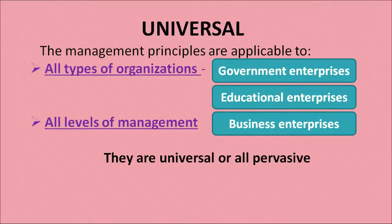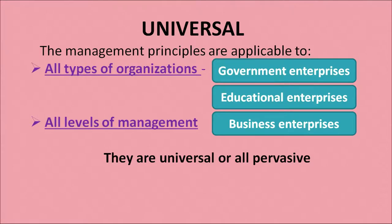The first characteristic is that management principles are universal. That means they are applicable to all types of organization — whether a business organization or a non-business organization like educational and non-governmental organizations — and they are equally relevant for all levels of management: higher level, middle level or lower level. These principles have universal applicability across all varieties of organization and all types of management levels.